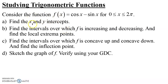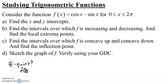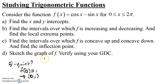We're going to start by determining particular points of this function, which are the x and the y-intercept. Regarding the y-intercept, it's the easiest. The y-intercept is for x equals 0, so we evaluate f(0): cosine of 0 is 1, sine of 0 is 0, which gives us 1. So the y-intercept is the point (0, 1).